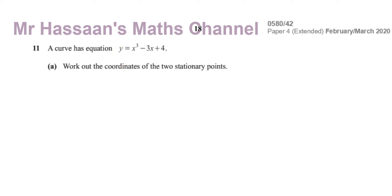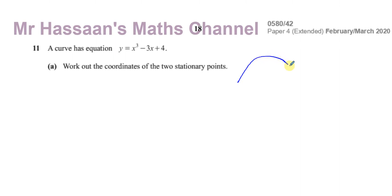This question tells us about a curve with equation y equals x cubed minus 3x plus 4. We have to work out the coordinates of the two stationary points. A curve is something where the gradient is constantly changing. So y equals x cubed — a curve with this form, when you have y equals x cubed and some other terms added to it, will generally have a particular type of shape.